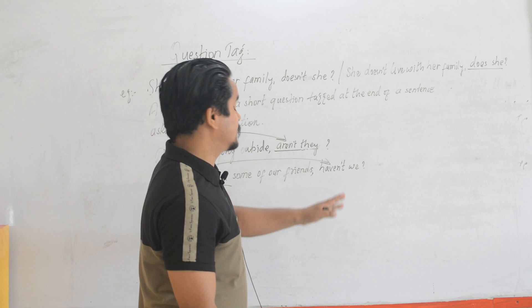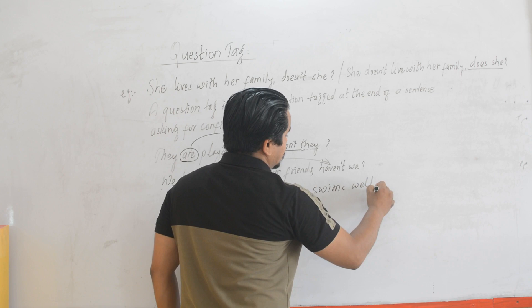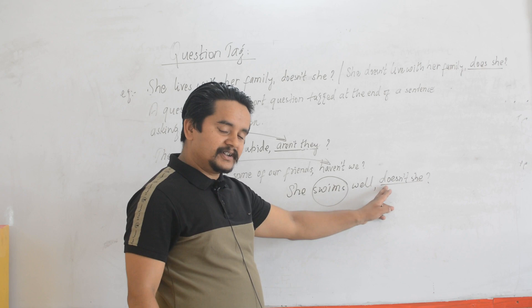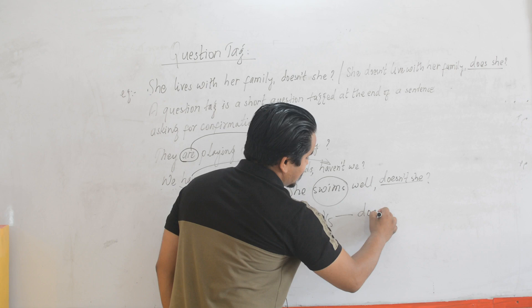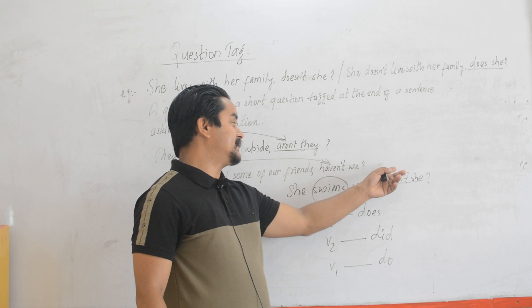Now, another example: 'He swims well.' What is the question tag here? Since we have a verb in V1 form here, we write 'doesn't he.' Why do we use 'does' here? Because the verb is in V1 form — the rule says if the verb is in V1 form, we go with 'does'. If the verb is in V2 form, we go with 'did'. And if the verb is in V1 form with a plural subject, we use 'do'. And make sure that if the sentence is negative, the question tag should be affirmative.